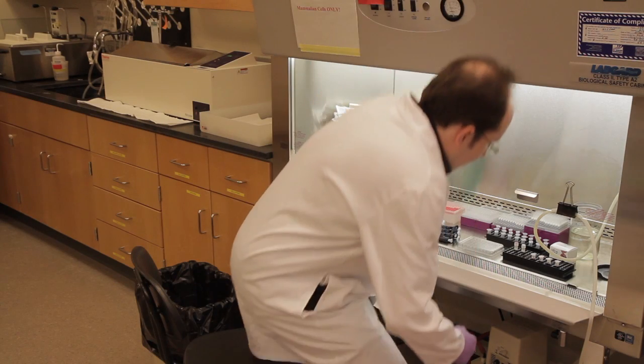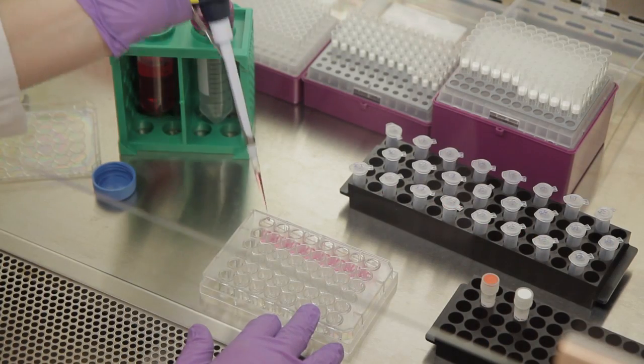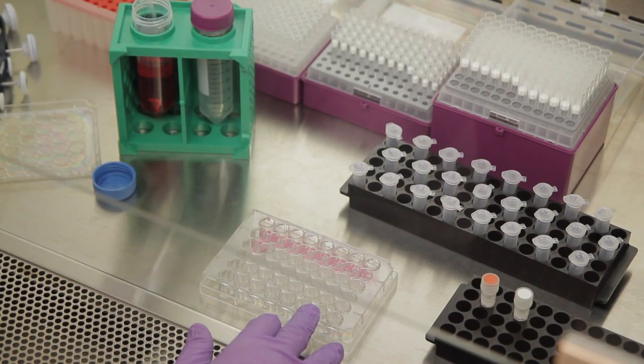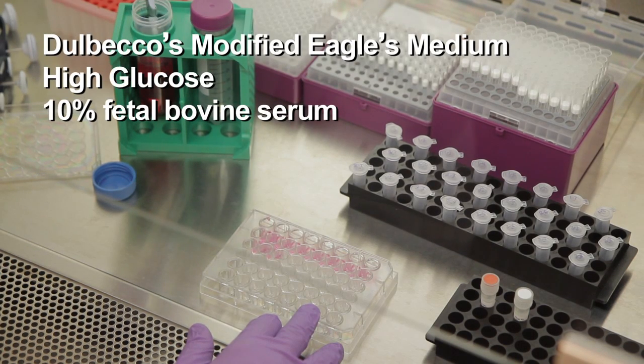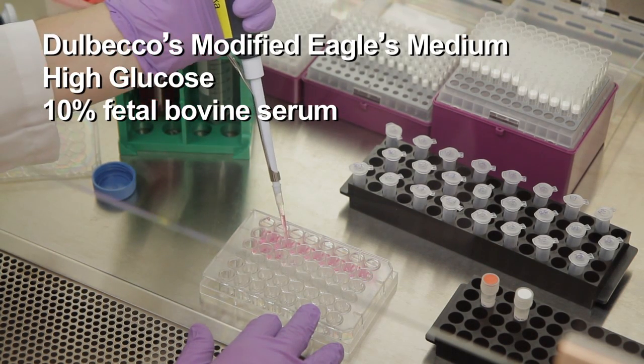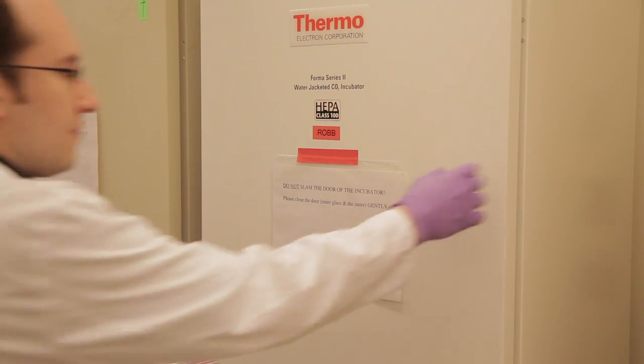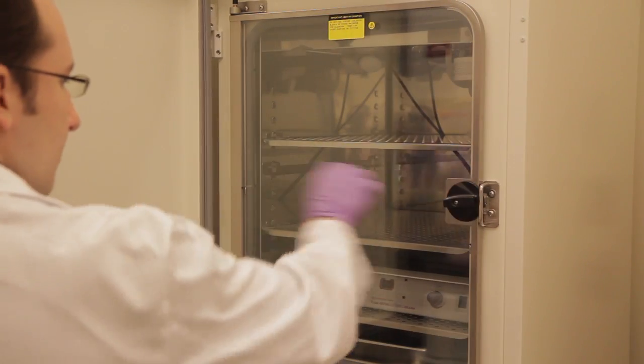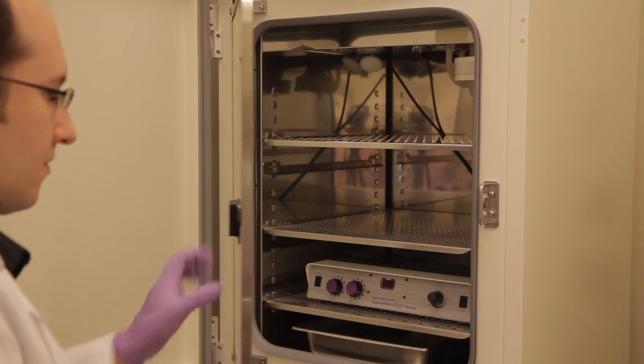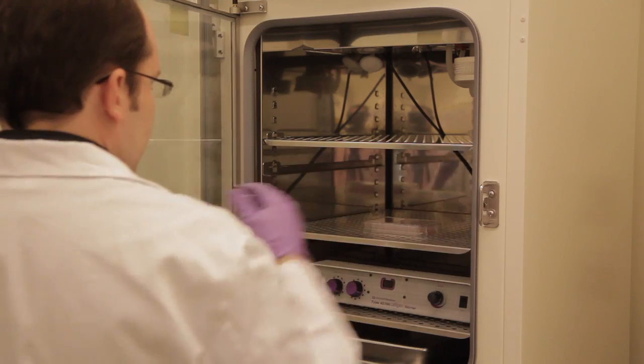Begin by plating HeLa cells in 28 wells of a 48-well plate. Each well should contain 70 to 230,000 cells and 150 microliters of high-glucose DMEM supplemented with 10% serum. Incubate the plate at 37 degrees Celsius until the cells are 60 to 90% confluent, which should take between 16 and 24 hours.